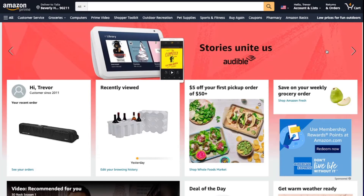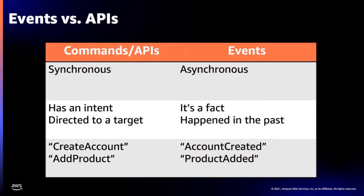Event-driven architecture is a relatively new concept in the cloud. Before, developers commonly used APIs — which are synchronous, meaning you can't move on until the response comes back. With APIs you send commands: go do this thing, create this account, add this product to the shopping cart. An event, however, is something that happened — a new file created, an exception occurred, a new customer created, a new order inputted into the system. Events tell you a fact. Events are also immutable — once it happens, you can't undo it. In practice, it's just a JSON object that tells you something that happened.